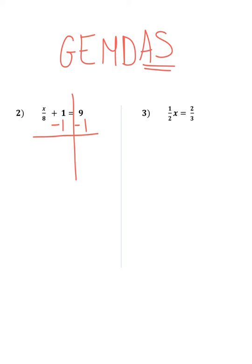We have a zero pair because one minus one is zero. So I Z that out, and I am left with X over eight on the left side equal to nine minus one, which is eight.